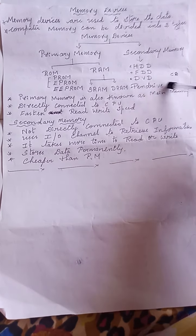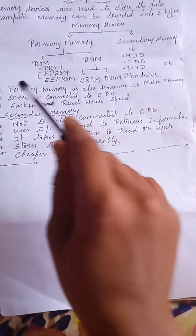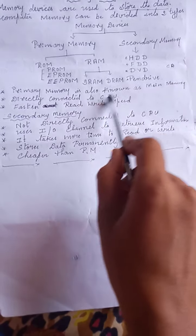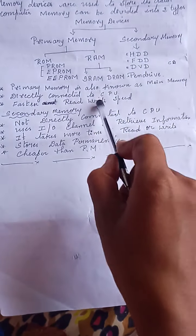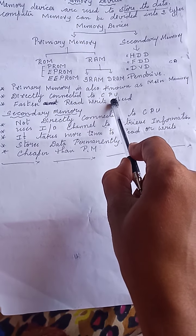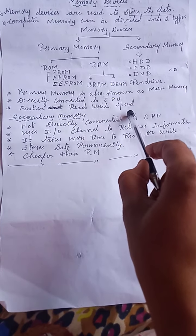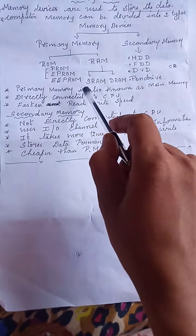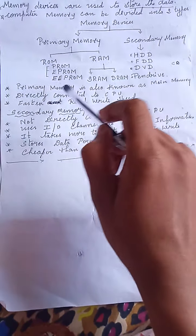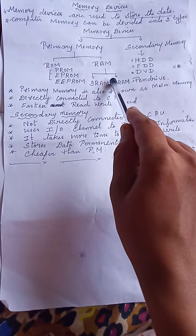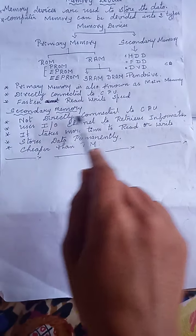Primary memory is also known as main memory. It is directly connected to the CPU and has faster read and write speed. RAM and ROM are inside the CPU — this is primary memory.